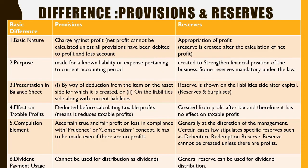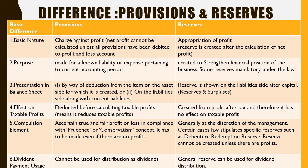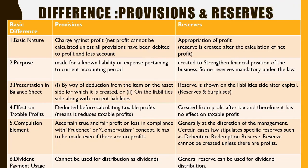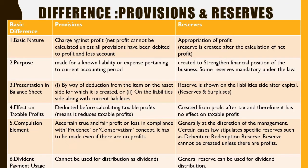Fifth point is the compulsion element. Provisions need to be created even if there is no profit, as the main intention is to get a true and fair profit or loss in the business. In the case of reserves, there are two cases: management can decide which reserve to create, or certain laws require mandatory creation of reserves — for example, debenture redemption reserve. Also, if there are no profits, it is not necessary to create reserves.